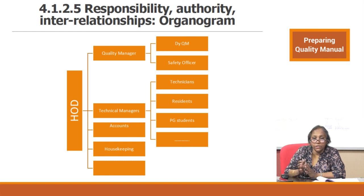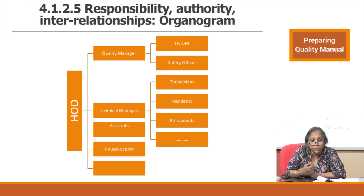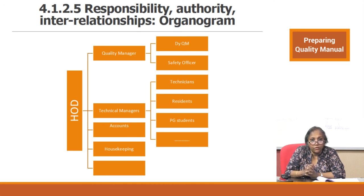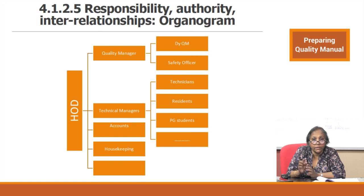That concludes the topic of the quality manual. In subsequent sections, we will learn about Level 2 documentation. To wrap up Level 1: we started with the quality policy, objectives, and indicators, and the quality manual. The quality manual is a substantial document requiring time to prepare. It includes introductory pages, management and technical requirements with references, and annexures at the end.